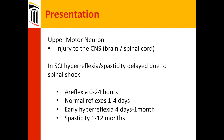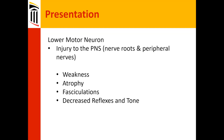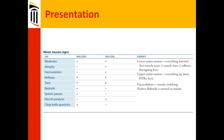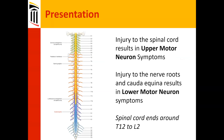For lower motor neuron injury to the peripheral nervous system: weakness, atrophy, fasciculations, and decreased reflexes and tone. There's a handy mnemonic — for lower motor neuron, everything is lowered: less muscle mass, less muscle tone, less reflexes, downgoing toes. For upper motor neuron, everything is up: tone, deep tendon reflexes, and upgoing toes. Injury to the spinal cord results in upper motor neuron symptoms; injury to the nerve roots and cauda equina results in lower motor neuron symptoms. The spinal cord ends around T12 to L2.